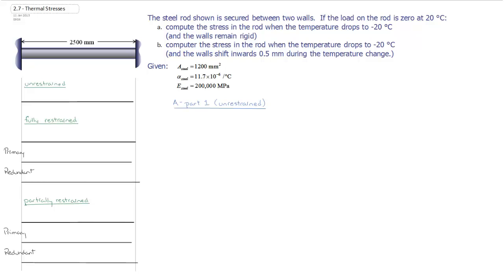So in Part B, we're going to compute the stress on the rod when the temperature drops minus 20 degrees Celsius. But in this instance, rather than having fully rigid supports, one of the supports is going to shift with the load of 0.5 millimeters in the same direction as the temperature change.